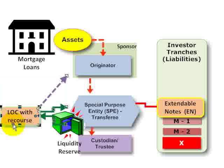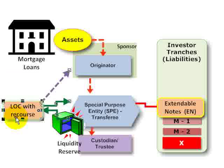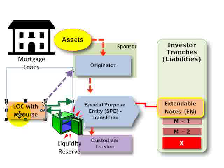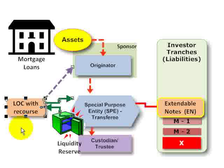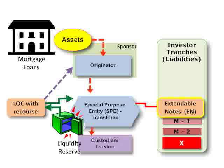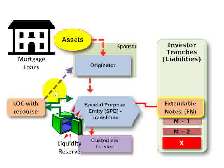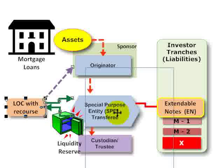Regarding external liquidity support, the first primary method for managing liquidity risk is the use of a line of credit with recourse. Historically these were more popular, largely due to the difference between Basel I and Basel II. The originator would provide a line of credit with recourse, and the special purpose entity could draw on it to fund some of the liquidity risk. Under Basel I, short-term lines of credit did not incur a capital charge for the bank, but this loophole has been closed in Basel II.